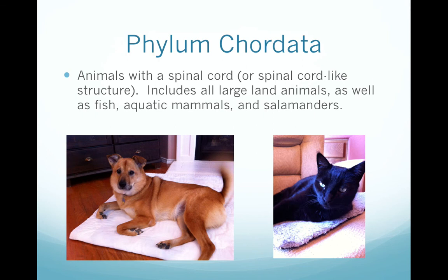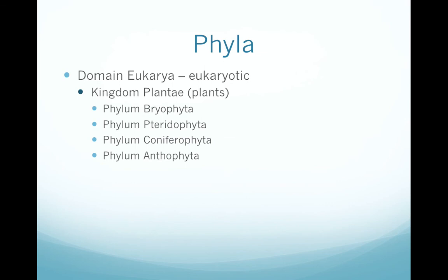Within Kingdom Plantae there are four phyla to know. Phylum Bryophyta contains the mosses, Phylum Pteridophyta contains the ferns, and Phylum Coniferophyta contains the cone-bearing plants like pine trees. The last phylum, Phylum Anthophyta, contains the flowering plants, and these plants produce seeds within fruits.